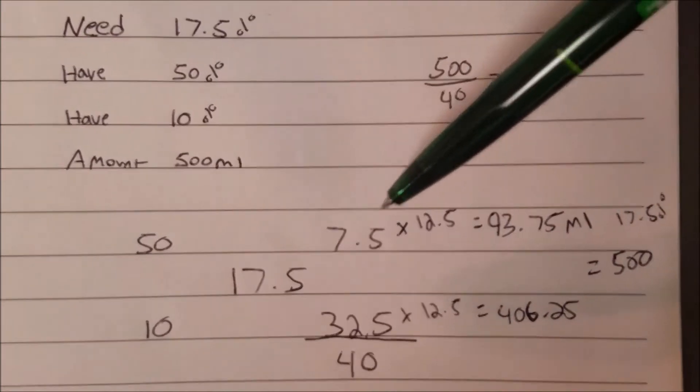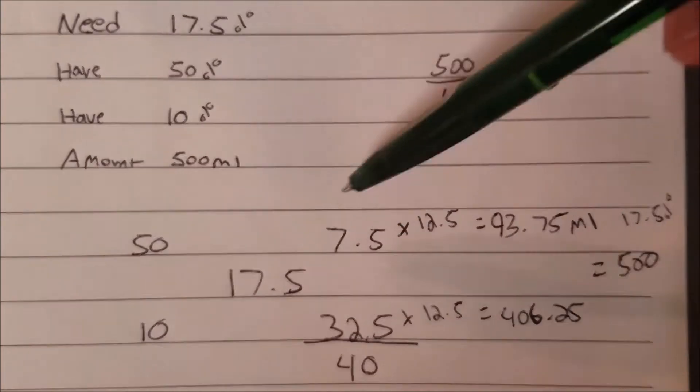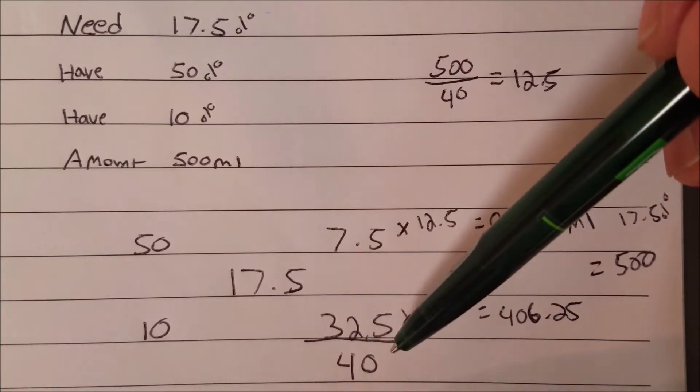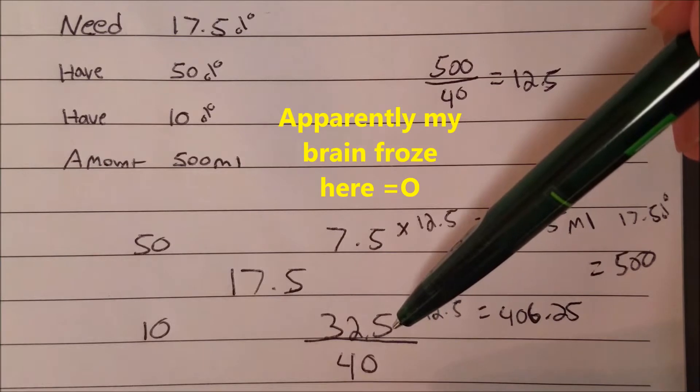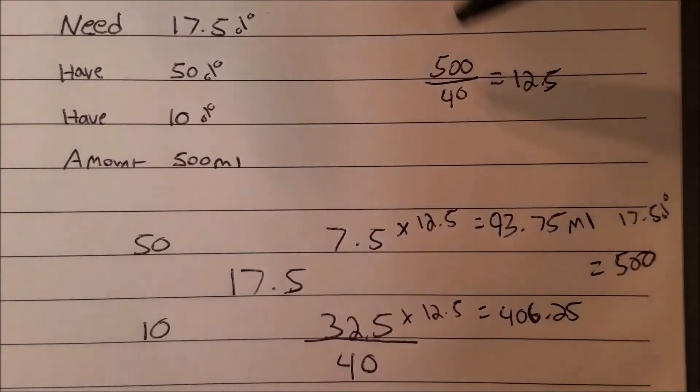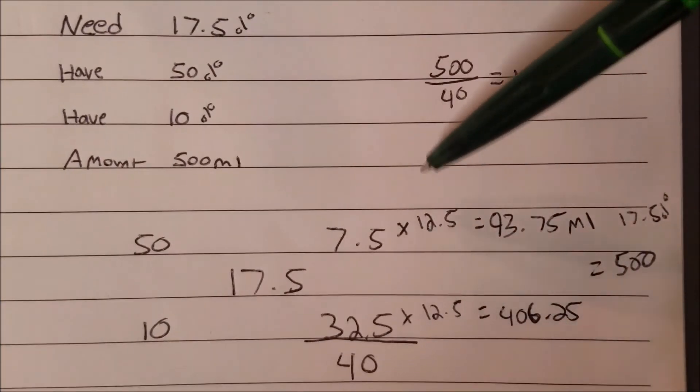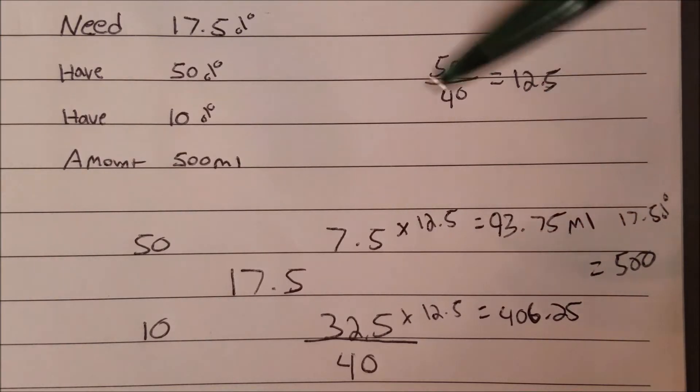The next step: add the parts from the cross subtraction. These are the parts, so the total amount of parts is 40. Then divide the amount needed by the total parts. The amount needed is 500 mls, divided by 40, that gives you 12.5. Step 6: multiply each part by the answer of the division. So this is each part, multiplied by 12.5. That gives you the amount of mls you need for each drug to make 17.5% of 500 mls.